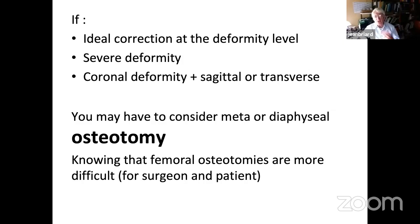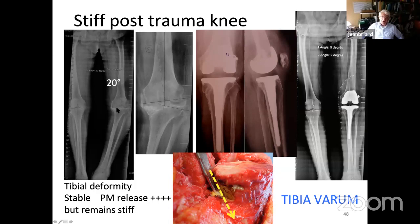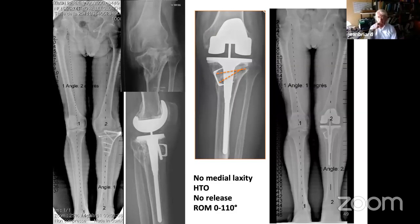For ideal correction of deformity, do it at the deformity level. If deformity is severe or involves coronal plus sagittal or transverse planes, consider metaphyseal or diaphyseal osteotomy. Femoral osteotomies are more difficult for both surgeon and patient post-operatively. One case: a lady with tibial intra-articular complex fracture, 20 degrees, already stiff — a huge release was performed and she was well corrected but remained stiff, as many traumatic post-fracture knees do.